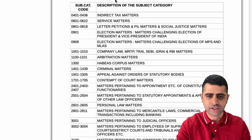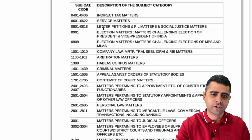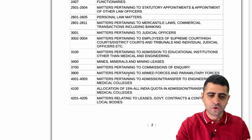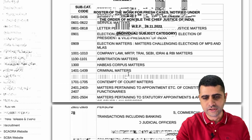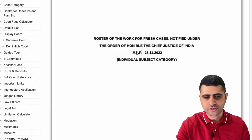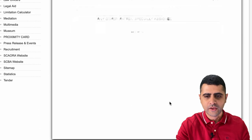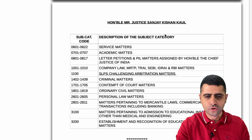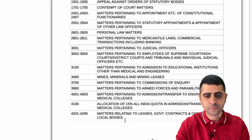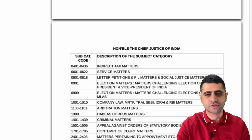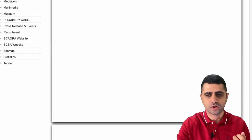As you can see on your screen, the Chief Justice of India has all these various types of matters which he will be looking into personally. This roster is effective from 28th of November 2022, and if you scroll down, you will see other judges' names and the different matters listed for them. This roster has been created by the Chief Justice of India, and that is exactly what his power is.